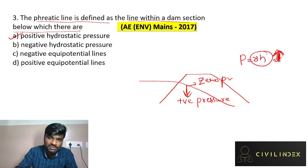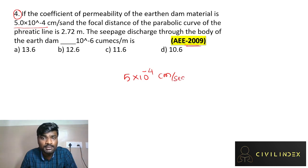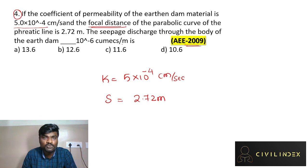Question number four is a numerical question from 2009 AEE. If the coefficient of permeability of an earthen dam material is 5 into 10 to the power of minus 4 centimeter per second, and focal distance is 2.72 meters, the seepage discharge through the body of the earthen dam is dash times 10 to the power minus 6 cubic meters per second per meter. Q is given by the formula k into s.